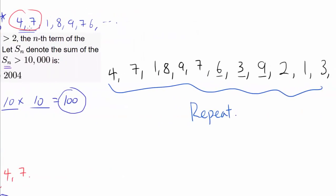So what do we want to find? We want to find when the sum of first n terms becomes greater than 10,000. Well, what's the sum of this repeating portion? Well, 4 plus 7 is 11, plus 1 is 12, plus 8 is 20, 29, 36, 42, 45, 54, 56, 57, 60. So we know the sum of the repeating portion is 60.